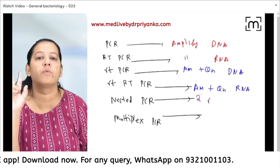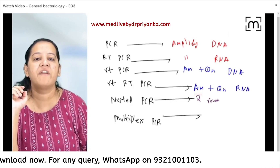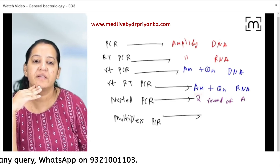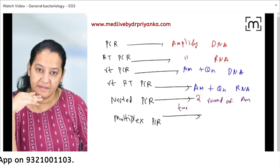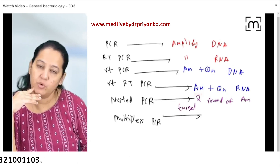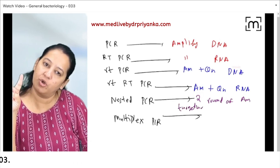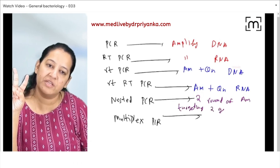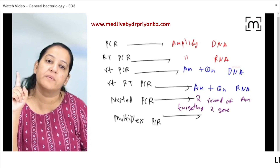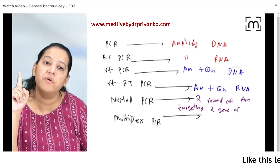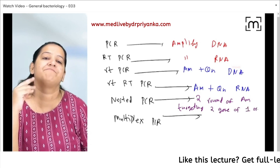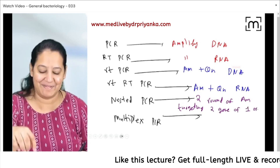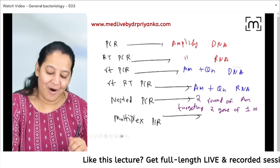In nested PCR, we conduct two rounds of amplification, targeting two genes or two DNA sequences of a single organism. That is nested PCR.